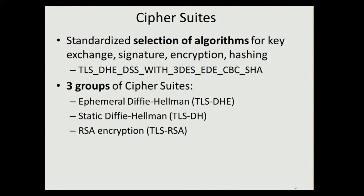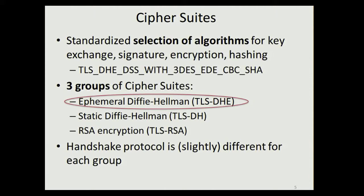There are many standardized cipher suites, but one can categorize them into three groups. The first are cipher suites based on ephemeral Diffie-Hellman, where both parties choose their DH exponent fresh for each execution. The second class is based on static Diffie-Hellman, where the server always uses the same DH share and only the client uses a fresh one. Finally, there is RSA-based key transport, where the client picks a random key, encrypts it, sends it to the server, and this key is then used in a key derivation function. In this talk, we consider cipher suites based on ephemeral Diffie-Hellman key exchange.